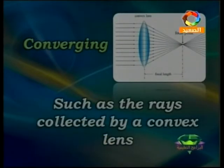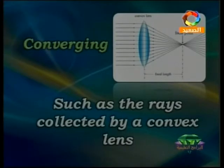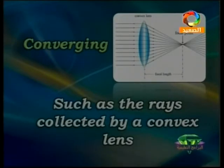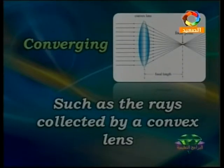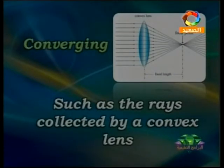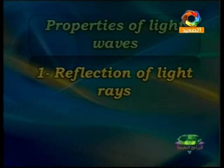After that, we have converging light rays. Converging means collecting light rays, such as rays collected by a convex lens, which we will discuss in the second lesson. The convex lens takes parallel light rays from the Sun or any source and collects them at a point called the focal point, or focus.